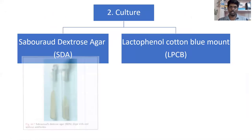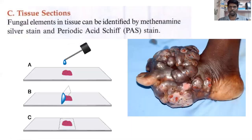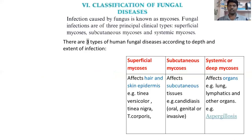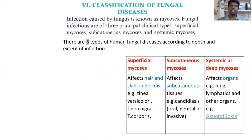That is all about revision. Now let us go to today's topic: classification of fungal diseases. The infection caused by a fungus is called mycosis — the state of having a fungal infection in a patient. These mycoses are majorly divided into three types.